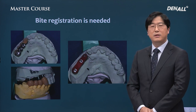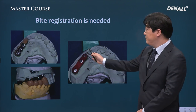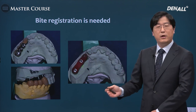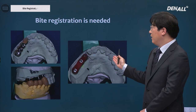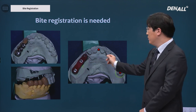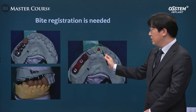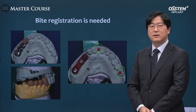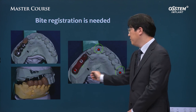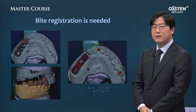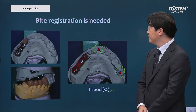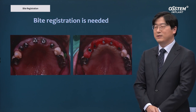When do we need to have a bite registration? At numbers 13, 14, and 16, implants were placed and a 4-unit bridge is planned. We need to take a bite here. At number 26 there is a stable contact point, and another in the anterior region, but except those two there is no other contact point. At the most posterior implant position, occlusal contact should be made to create a bite registration in a tripod shape.